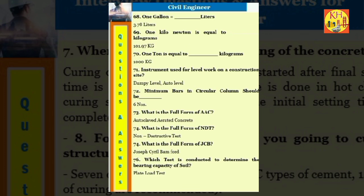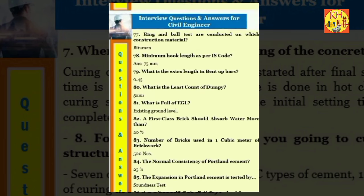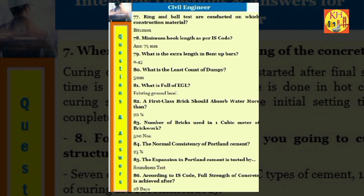Question 76: Which test is conducted to determine the bearing capacity of soil? Plate load test. Question 77: Ring and ball test are conducted on which construction material? Bitumen. Question 78: Minimum hook length as per IS code: 75 millimeters. Question 79: What is the extra length in bent up bars? 0.45. Question 80: What is the least count of dumpy? 5 millimeters. Question 81: What is full of EGL? Existing ground level. Question 82: A first class brick should absorb water more than 20%. Question 83: Number of bricks used in one cubic meter of brick work: 500 numbers.